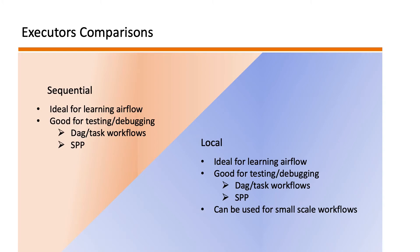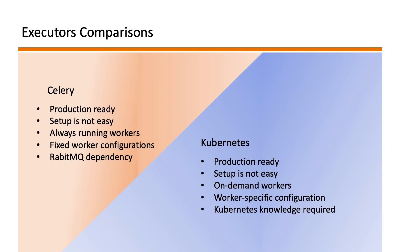In conclusion, let us compare the executors we discussed. We have seen two local executors and two remote executors. The sequential and local executors are ideal for learning Airflow and testing your DAGs and task workflows, including testing cases where you need to handle single points of failure. The local executor, which provides parallelism of tasks, can be used for small-scale workflows like managing four or five cron jobs. However, these lightweight workflows in organizations tend to get complicated over time, so one should definitely migrate from local to remote executors, which are production-ready.